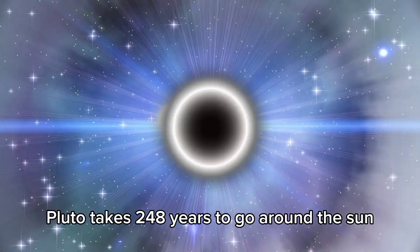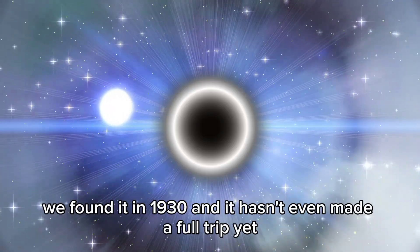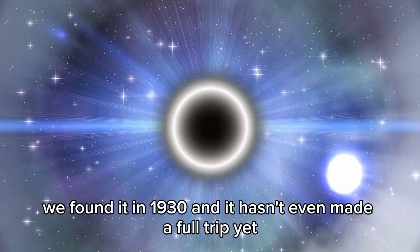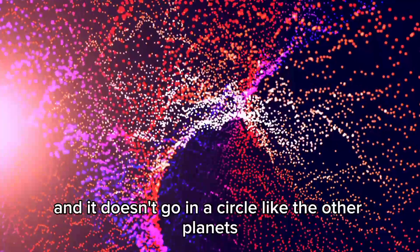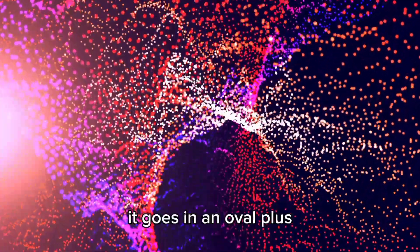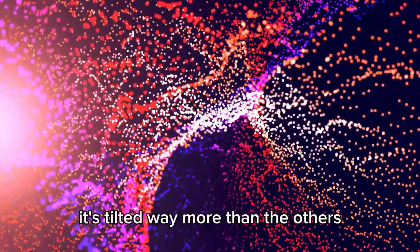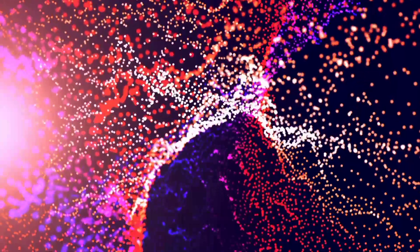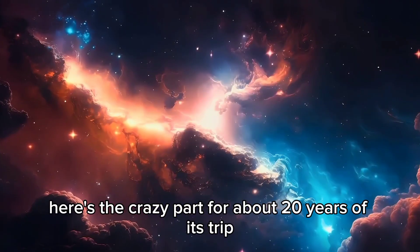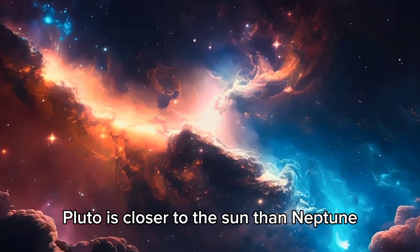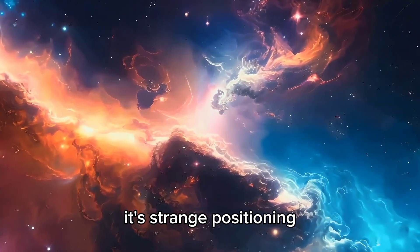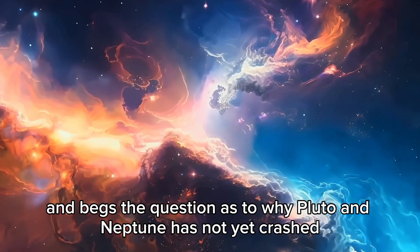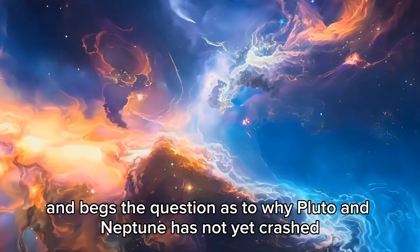Pluto takes 248 years to go around the Sun. We found it in 1930, and it hasn't even made a full trip yet. And it doesn't go in a circle like the other planets. It goes in an oval. Plus, it's tilted way more than the others. Here's the crazy part. For about 20 years of its trip, Pluto is closer to the Sun than Neptune. It's strange positioning and begs the question as to why Pluto and Neptune has not yet crashed.